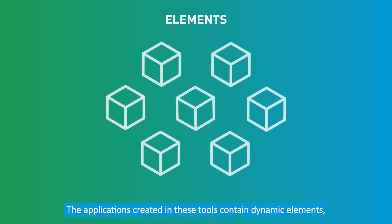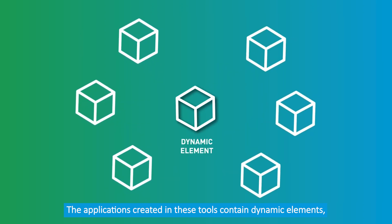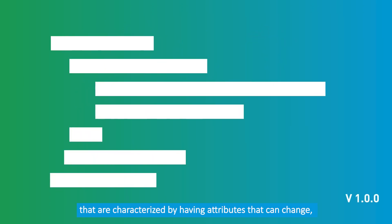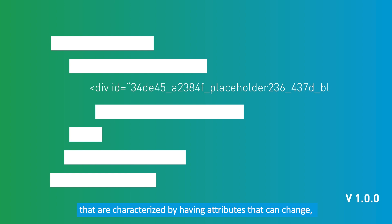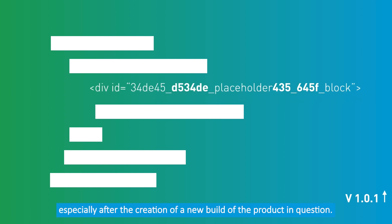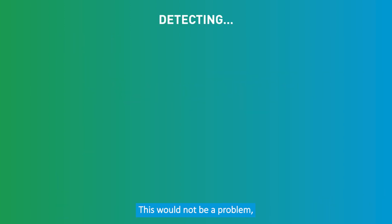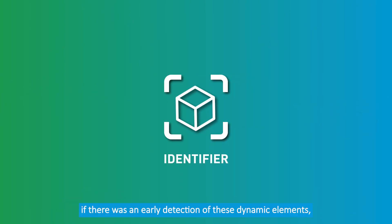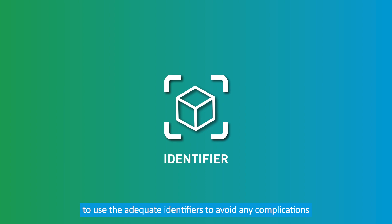The applications created in these tools contain dynamic elements that are characterized by having attributes that can change, especially after the creation of a new build of the product in question. This would not be a problem if there was an early detection of these dynamic elements, which would allow the responsible team to use the adequate identifiers to avoid any complications.